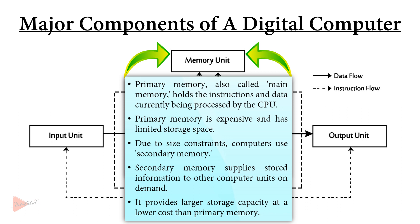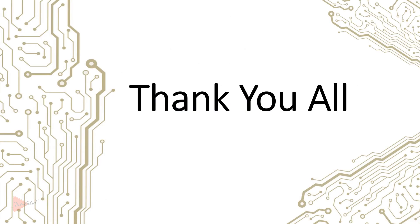However, primary memory comes at a notable cost and offers limited storage space. Owing to this confinement in primary memory size, computers employ secondary memory extensively for data and instruction storage. This secondary memory supplies stored information to other computer units on demand. It presents a greater storage capacity and comes at a more affordable price point compared to primary memory. Some examples of secondary storage devices include floppy disk, hard disk, and tape drives.